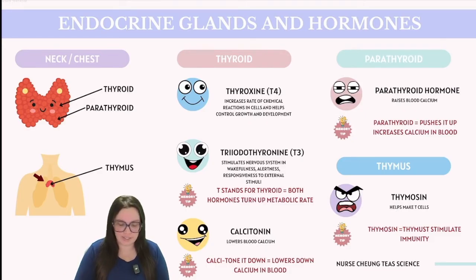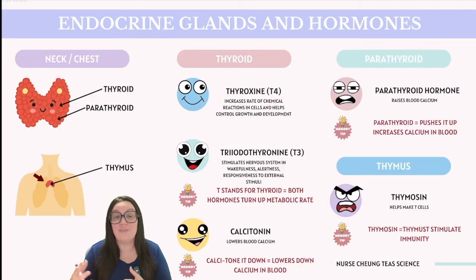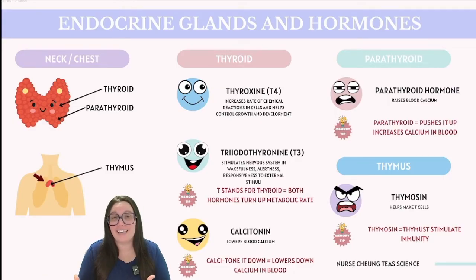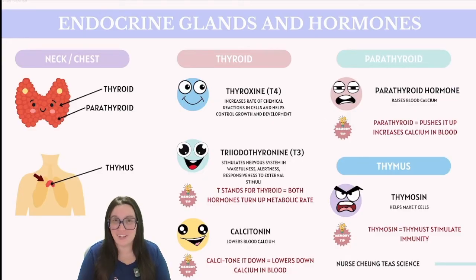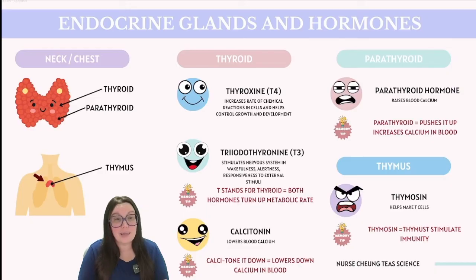Next, let's focus on the thymus gland. Some endocrine diagrams might leave out the thymus, possibly because it diminishes as a person matures into adulthood. However, as a gland, the thymus produces hormones that influence immune function, also known as thymosin. Thymosin is particularly important because it stimulates the production of T cells, which are key players in the immune response. An easy way to remember thymosin is thymus stimulate immunity.